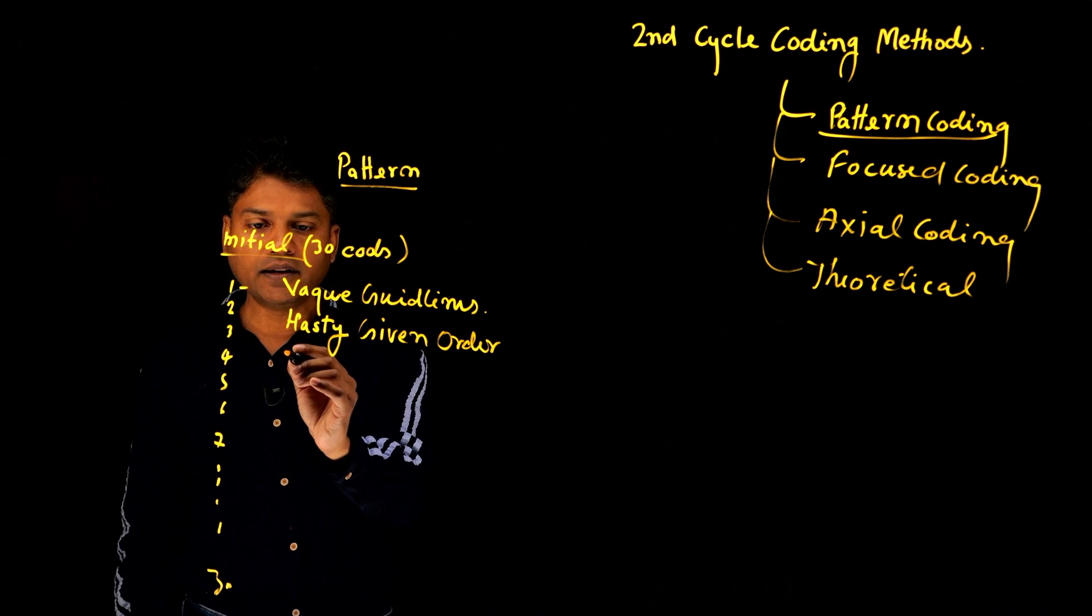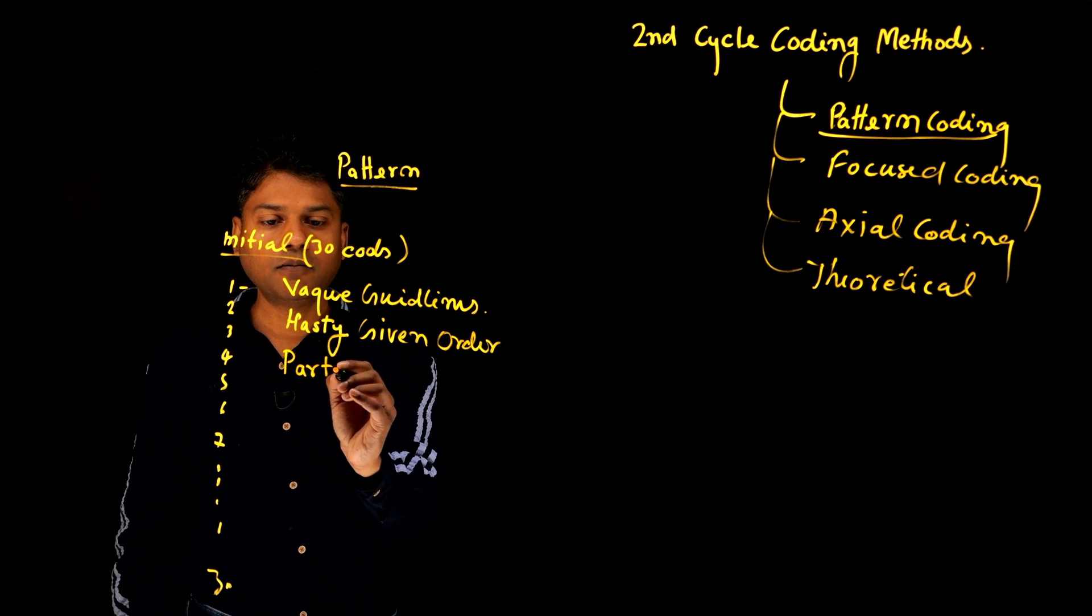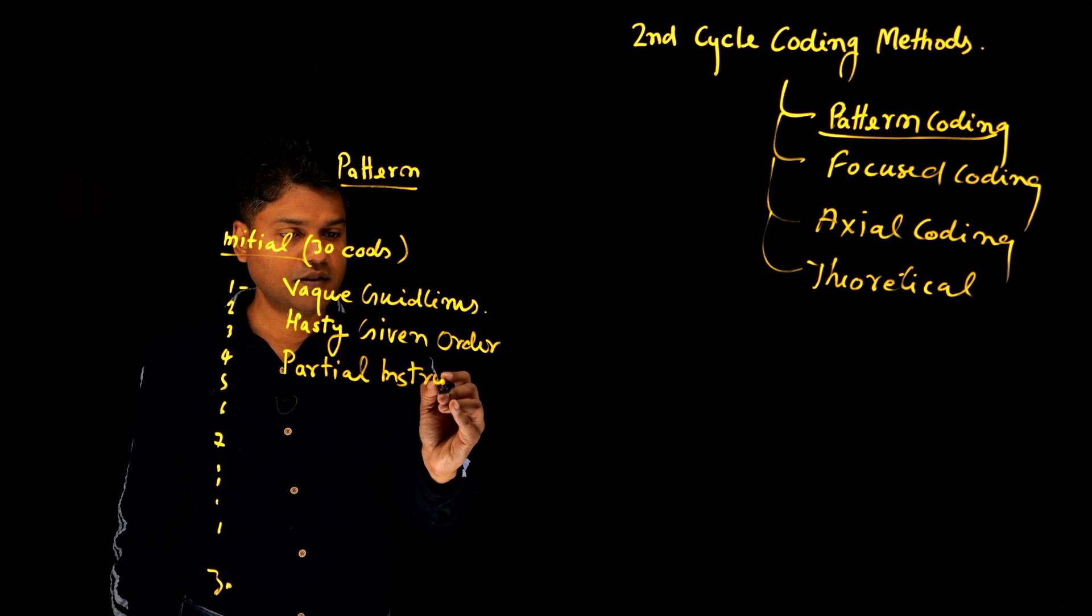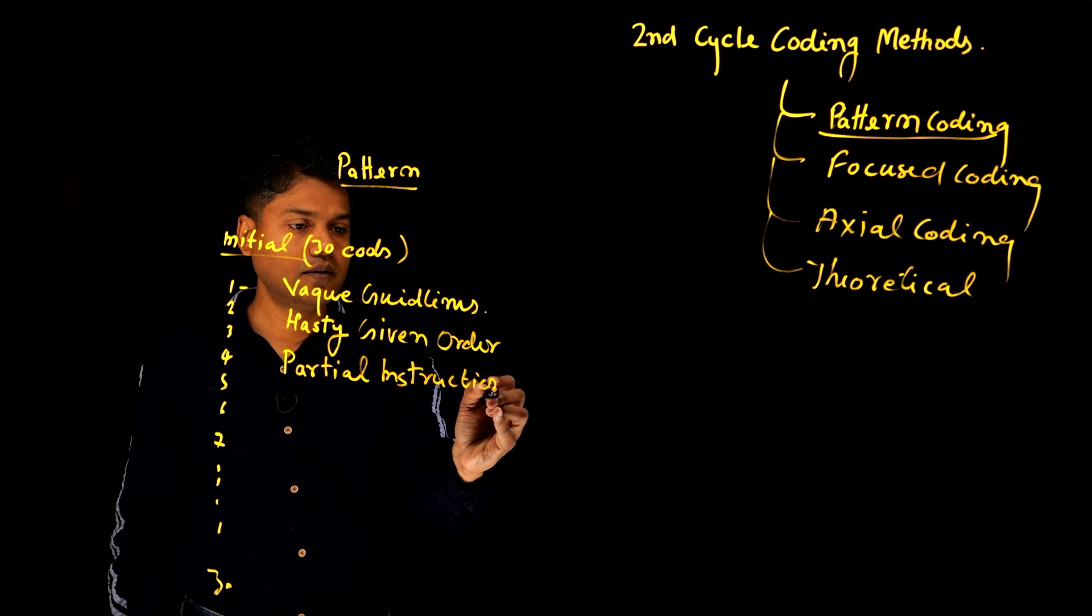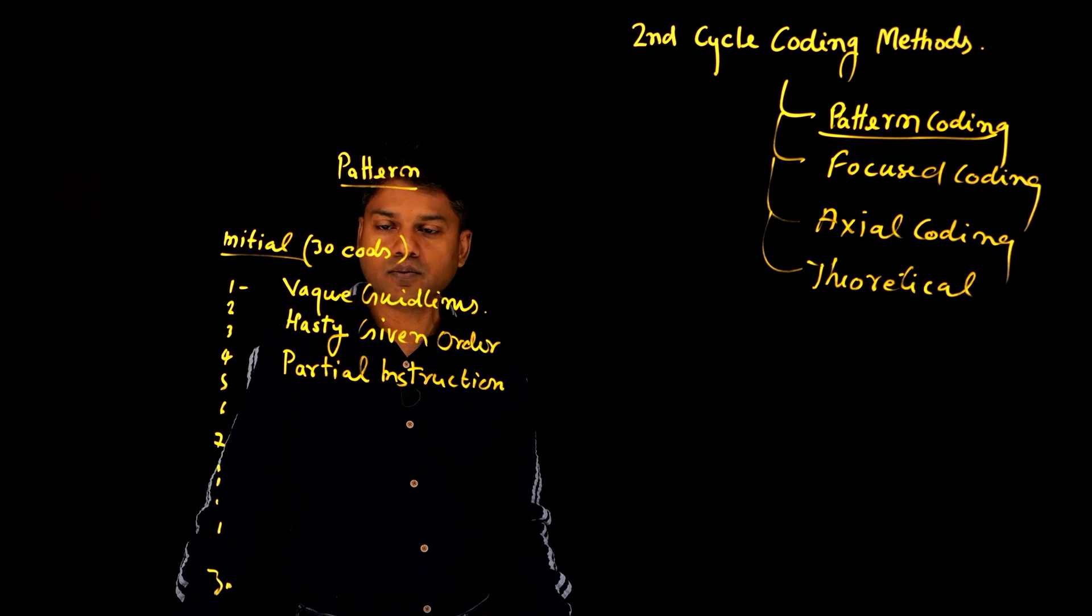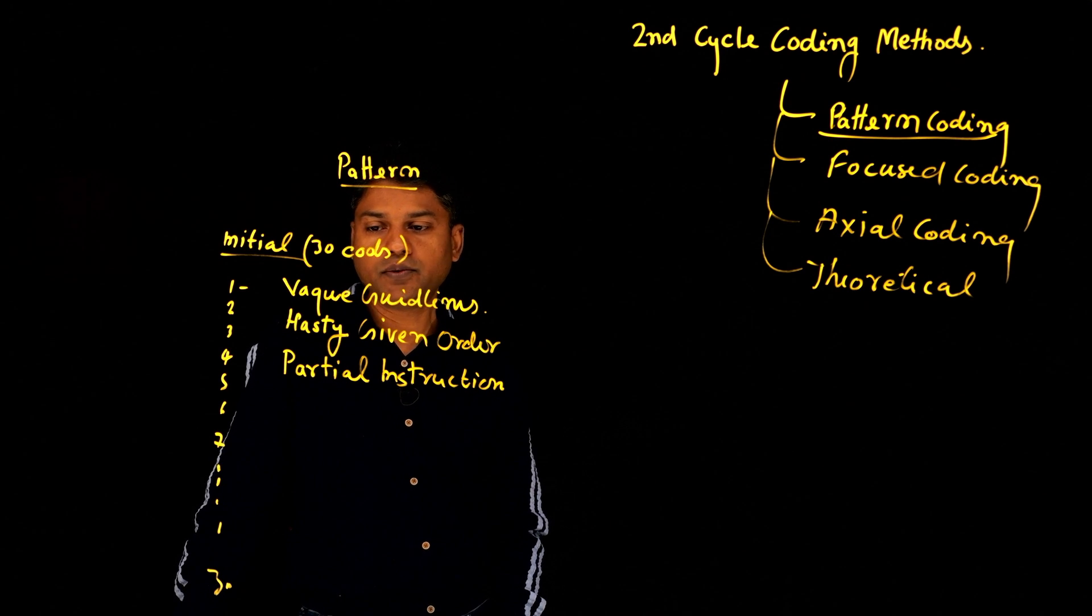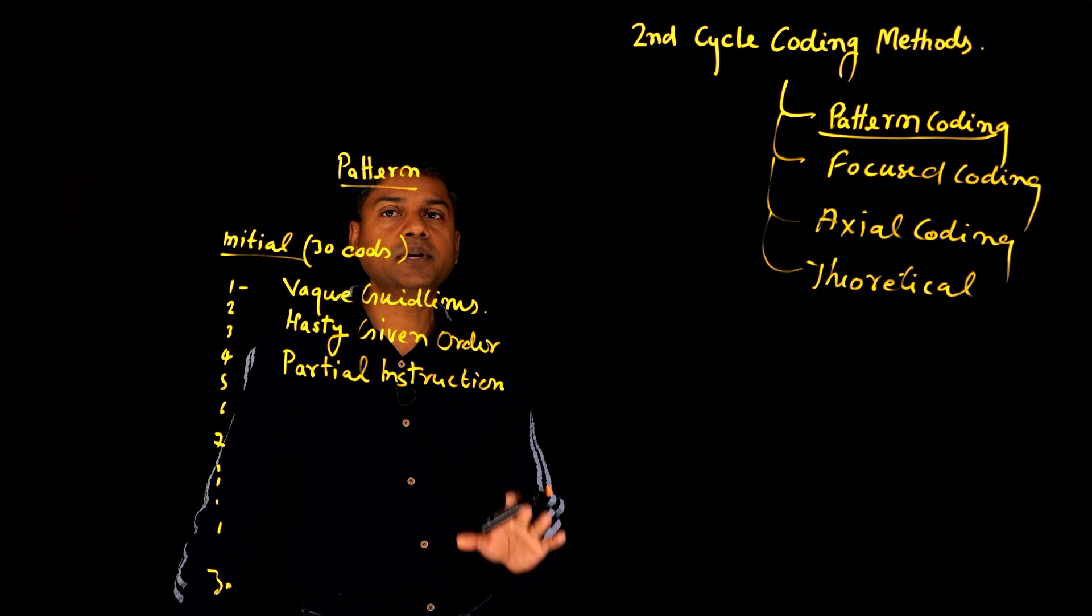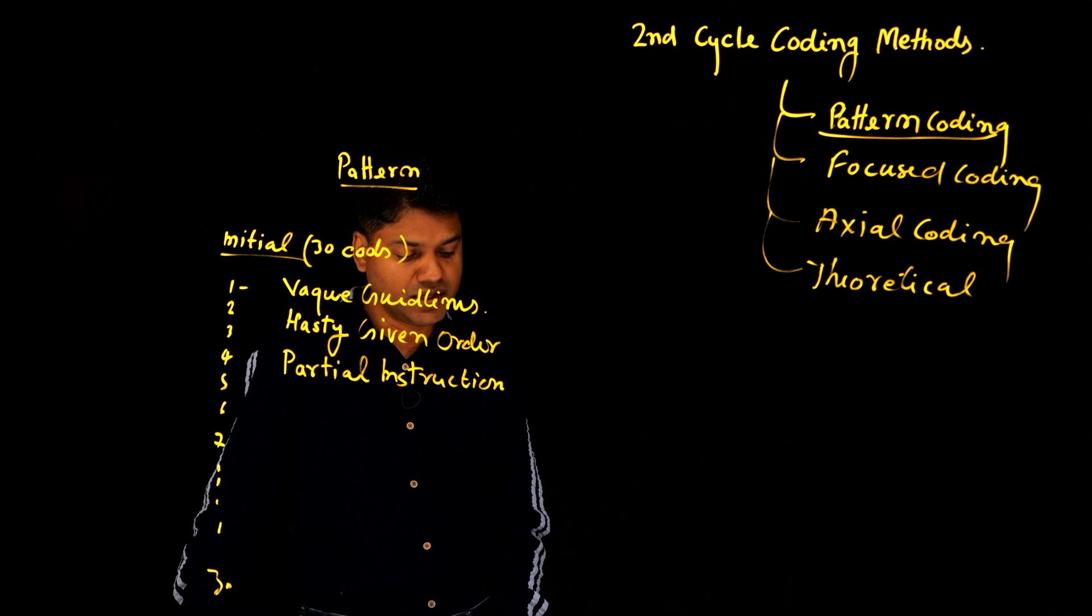And there is another code, let's say partial instruction. And this code is about sometimes the communication which is given, the orders which are given, directions which are given, they are partial, they don't complete all the information which is needed.